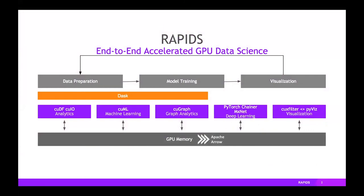The Rapids initiative is an open source project that NVIDIA is incubating to bring GPU computing and GPU acceleration to expressive, productive languages like Python. Rapids is really an end-to-end accelerated data science ecosystem. Instead of taking just the 5% of your code that's compute intensive, let's take 99% of your code — even areas that aren't as compute intensive can still be exposed to significant parallelism.